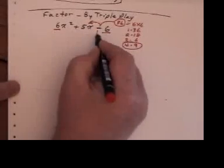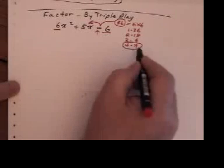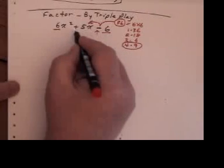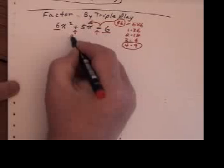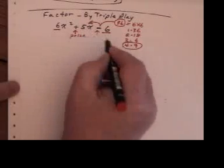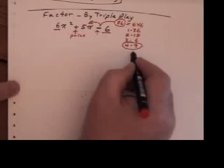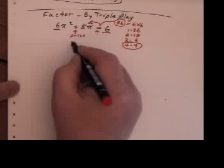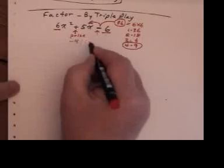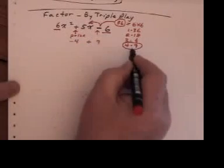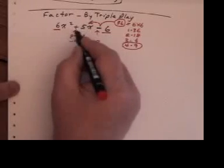Now, because that's a negative sign, 4 and 9 have to have opposite signs and the plus sign is going to go to the biggest number. So I'm going to have a minus 4 and a plus 9. That goes together to make plus 5.